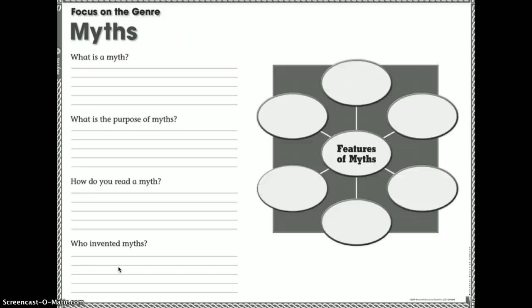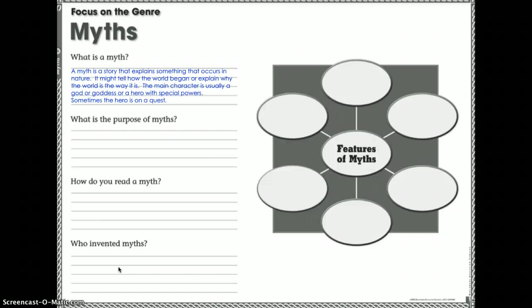Hopefully you've gone through and answered those questions to the best of your ability. This is about what you already know. A myth is a story that explains something that occurs in nature — it might tell how the world began or explain why the world is the way it is. The main character is usually a god, goddess, or a hero with special powers, sometimes on a quest. Basically, a myth is when an ancient society tries to explain something they didn't understand.